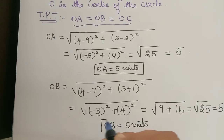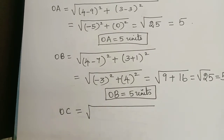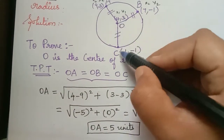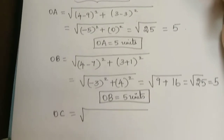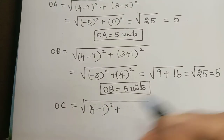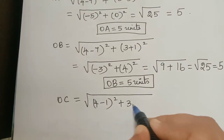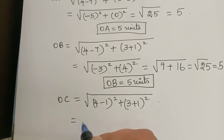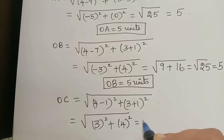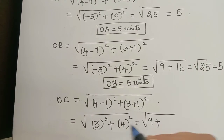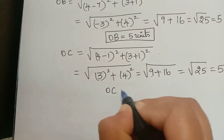Next we shall find OC. Here x1 comma y1 is 4 comma 3 and x2 comma y2 is 1 comma minus 1. So OC equals the square root of (4 minus 1) squared plus (3 minus of minus 1) squared. Now 4 minus 1 is 3, and 3 minus of minus 1 becomes 3 plus 1 which is 4. So that is square root of 9 plus 16, which is square root of 25, equal to 5. Therefore OC is equal to 5 units.